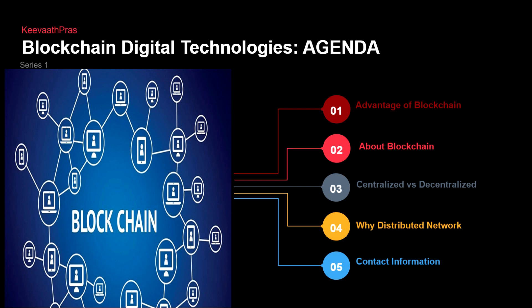In today's lecture we'll be seeing a quick rehash of Bitcoin, I mean blockchain. We're going to see what are the advantages of blockchain, and once again the centralized and decentralized architecture and why we chose distributed. So let's take a deep dive. Today in blockchain's lecture what we're going to be seeing is the advantages of blockchain, what is a blockchain, what is the difference between centralized and decentralized, and why we need to go for a distributed network.